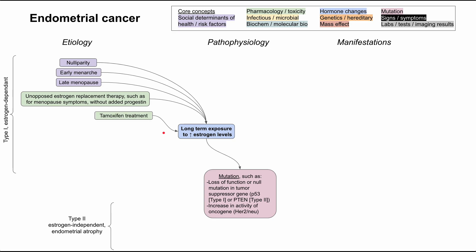Another medication with a similar effect is tamoxifen, a selective estrogen receptor modulator usually used for breast cancer. Women with a history of breast cancer who have taken tamoxifen may be predisposed to endometrial cancer through this mechanism.